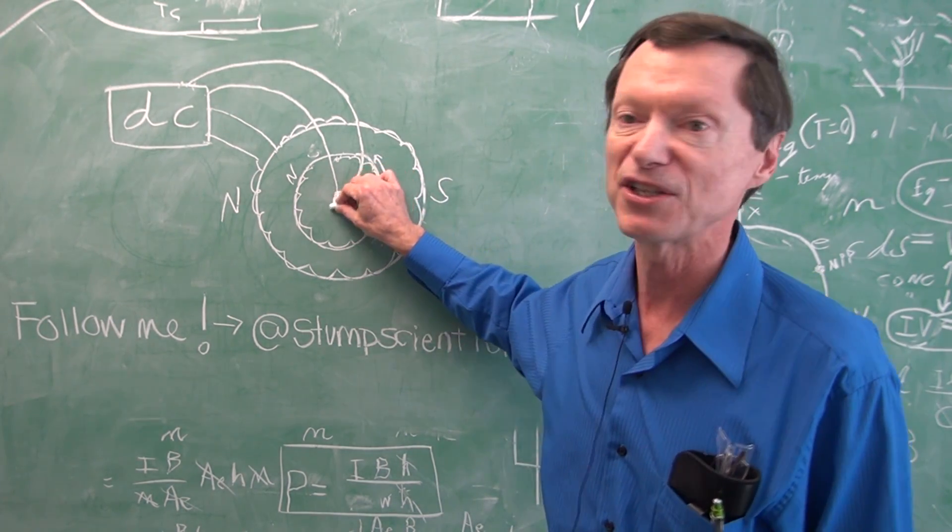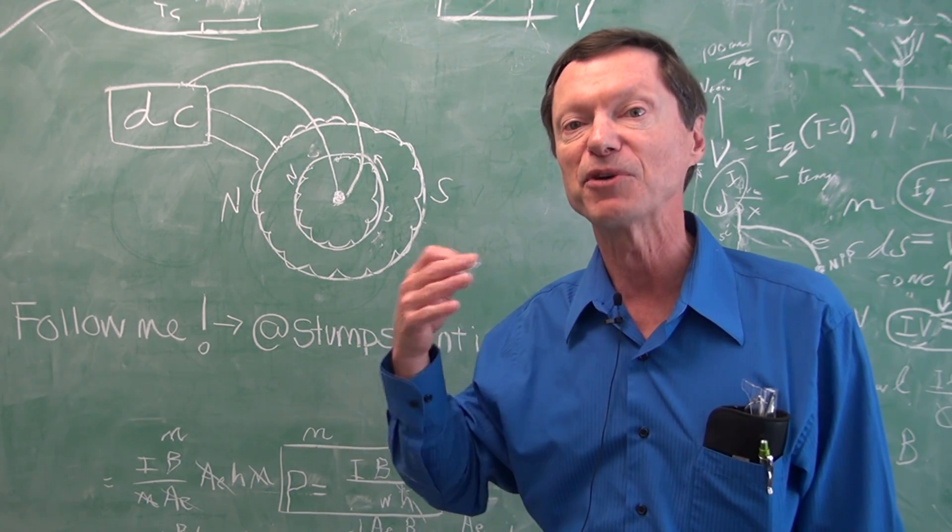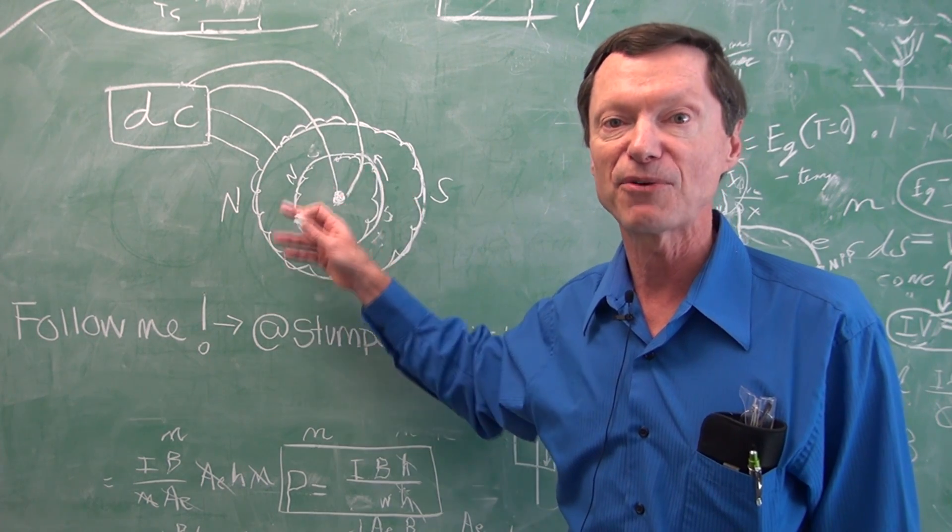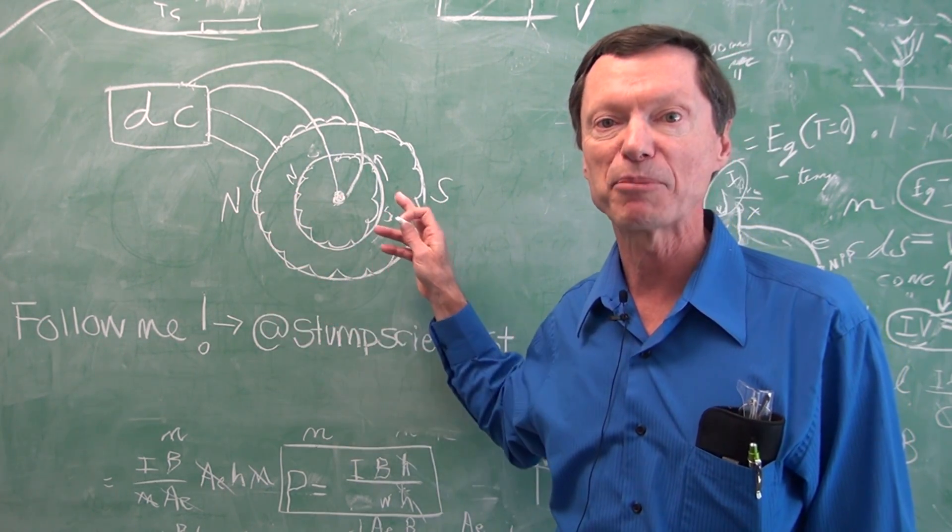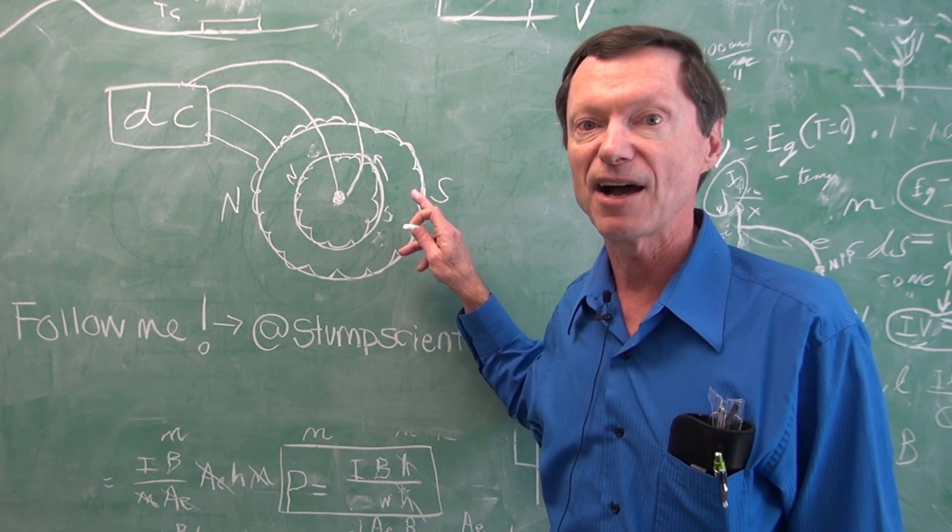So this device that does this is mechanical and it's called a commutator. And we see that when the commutator is working right, the rotor just keeps running around and around in order to keep chasing its opposite pole in the stationary armature winding.